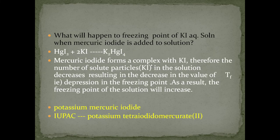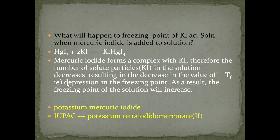What will happen to the freezing point of KCl solution when mercuric iodide is added? HgI₂ + 2KI gives K₂HgI₄. Mercuric iodide forms a complex with KI. Therefore, the number of solute particles in the solution decreases, resulting in a decrease in the depression in freezing point. As a result, the freezing point of the solution will increase. The product is potassium mercuric iodide, with IUPAC name potassium tetraiododemercurate(II).